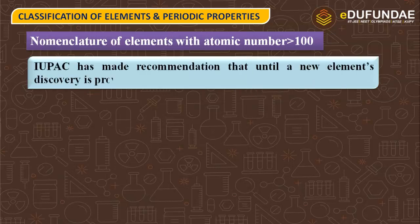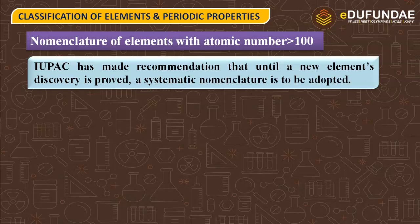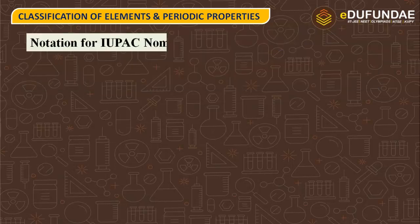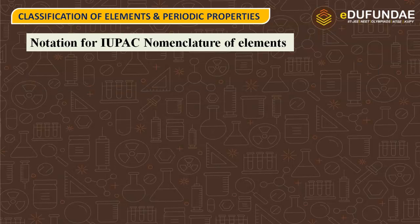IUPAC has made the recommendation that until a new element's discovery is proved, a systematic nomenclature is to be adopted. IUPAC has said that until an element's name is officially proved, on the basis of the atomic number of that element, the nomenclature will be done.